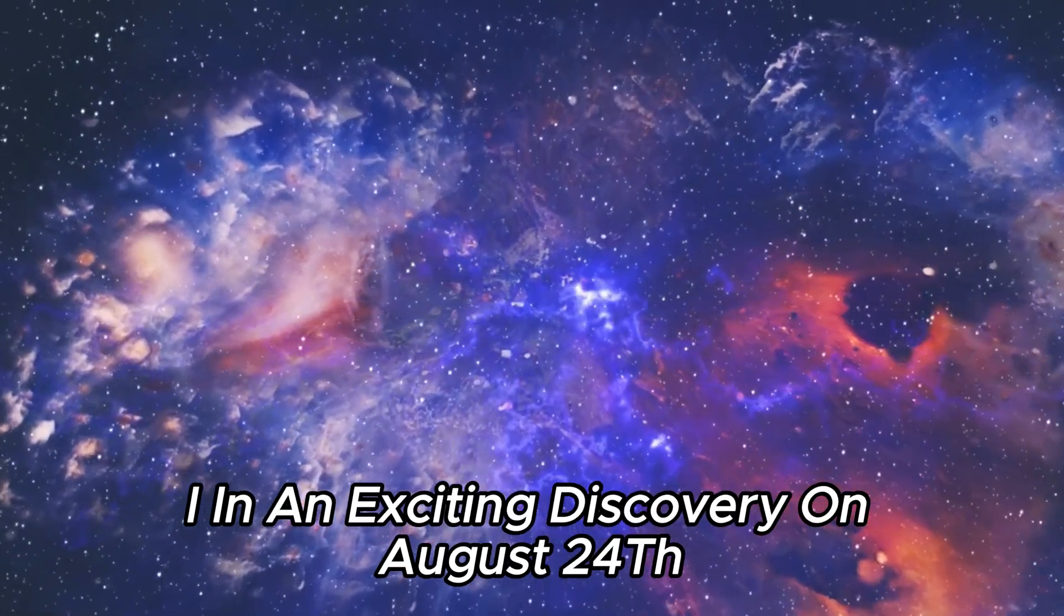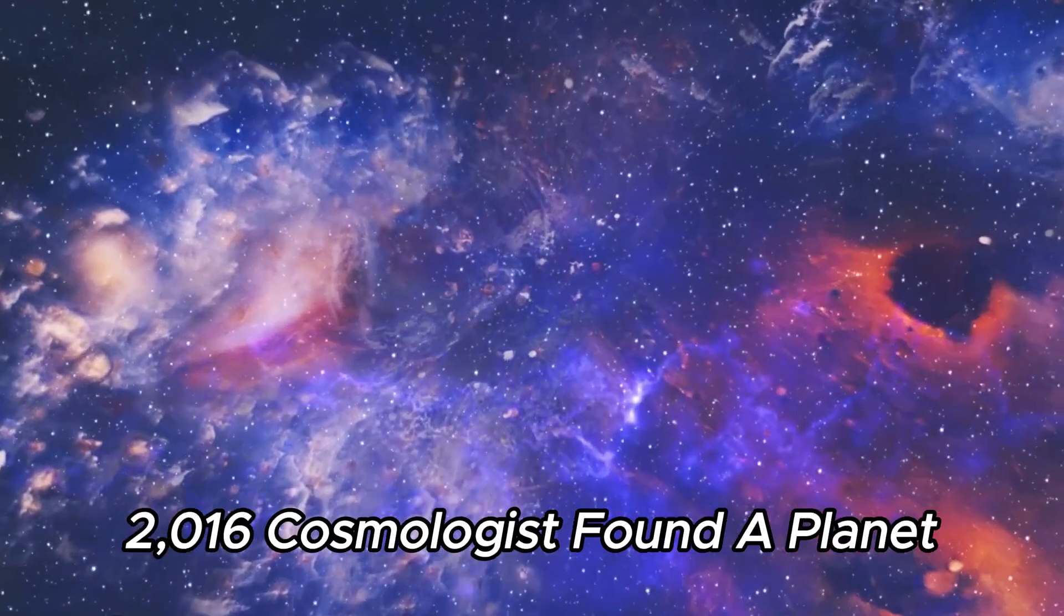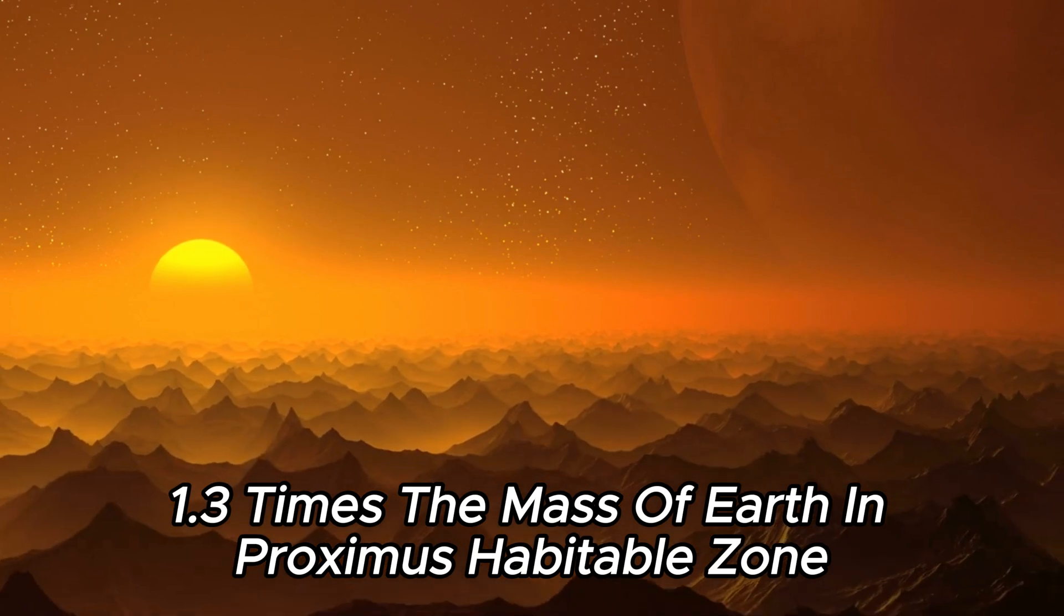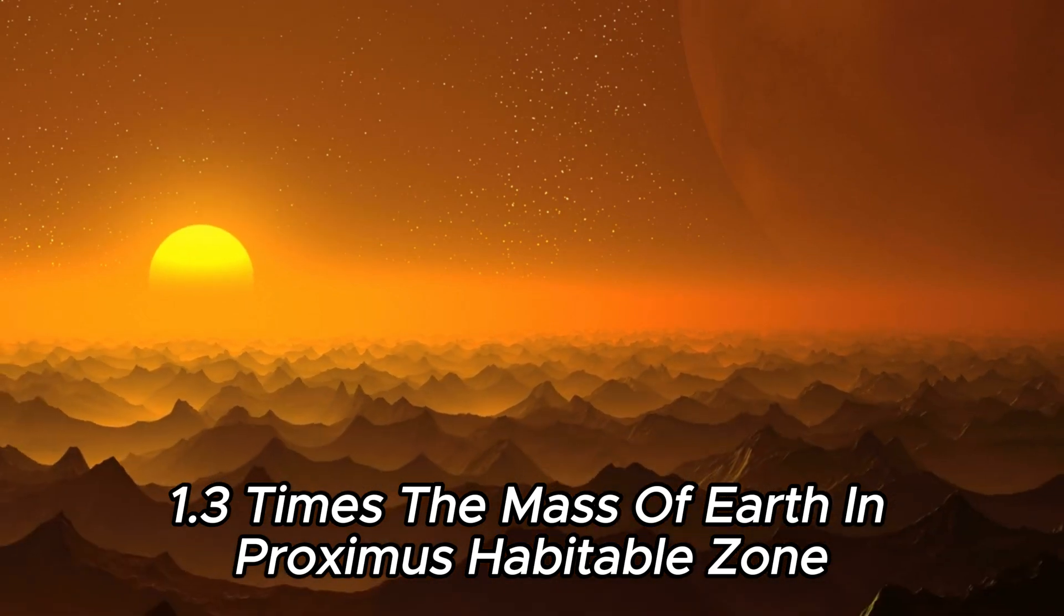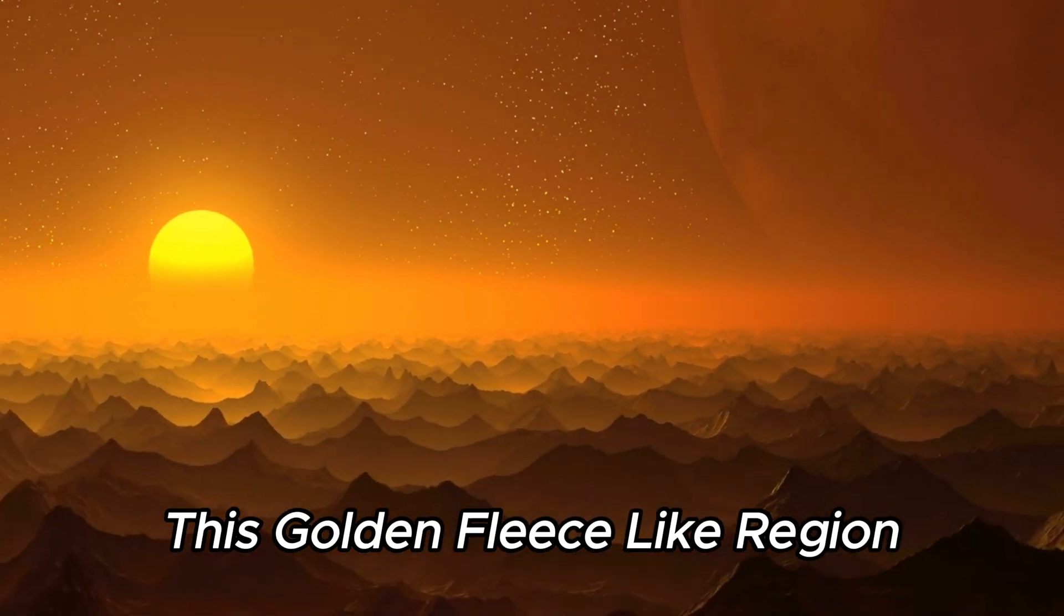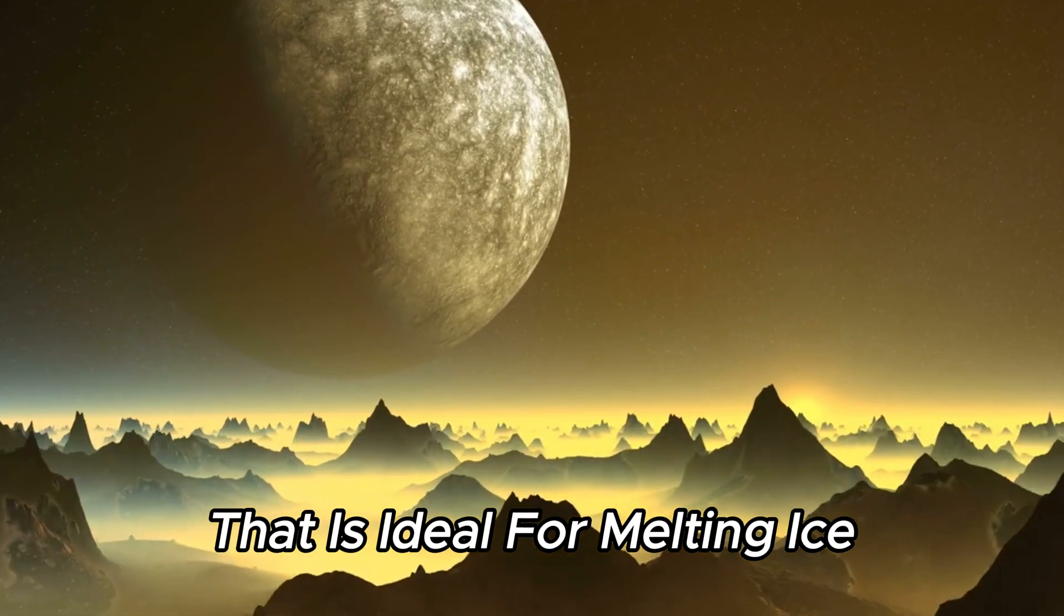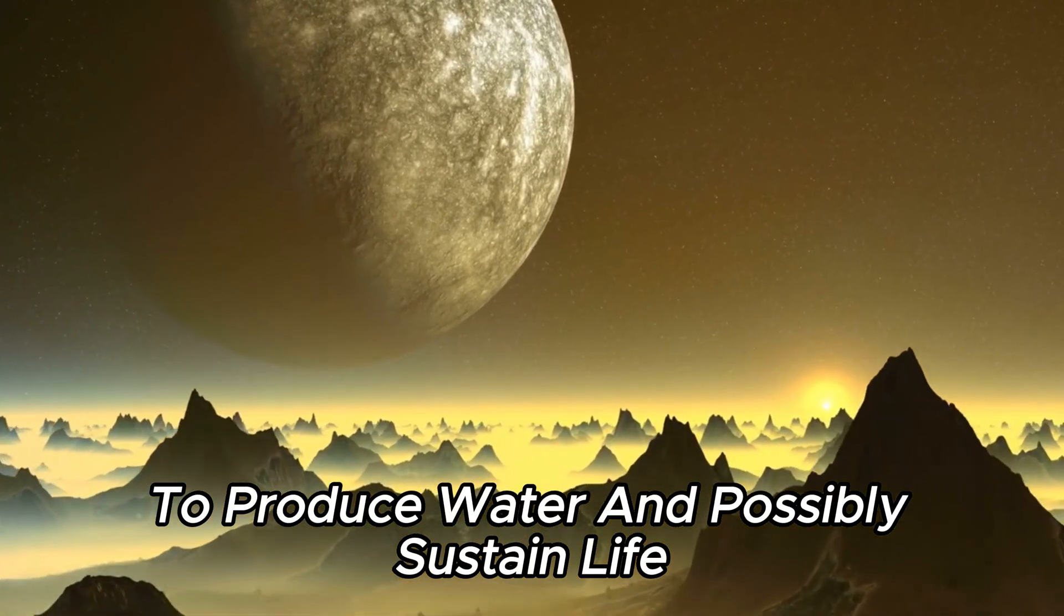In an exciting discovery on August 24, 2016, cosmologists found a planet 1.3 times the mass of Earth in Proxima's habitable zone. This golden fleece-like region provides a delicate balance of light intensity that is ideal for melting ice to produce water and possibly sustain life.